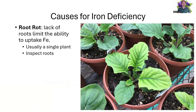Root rot — lack of roots available results in limited iron availability to uptake. This is generally going to be a single plant amongst many. And when you look at the roots, you'll see that there's root rot occurring, and that plant's simply not able to take up the nutrients. So if it's across many plants, think nutritional. But if it's only a single plant, think biotic — which is what's occurring here.